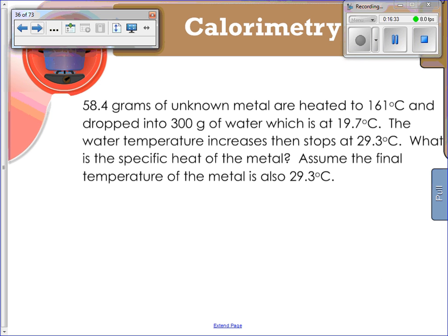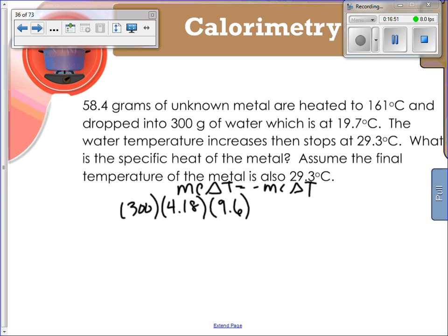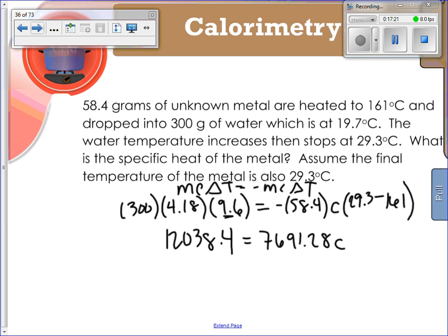Go ahead and try this third one. Let's go over it. Hopefully you knew to set up mc∆T equals negative mc∆T. You've got 300 times 4.18. You get 9.6 when you subtract T final minus T initial, and that's two significant figures, so that's going to dictate our significant figures for the rest of the problem. Negative 58.4 for the mass of unknown metal. I don't know the C value for it. Then it's 29.3 minus 161. You get 12384.4 equals 7691.28 times C. C is going to end up being 1.6 joules over grams degrees Celsius.